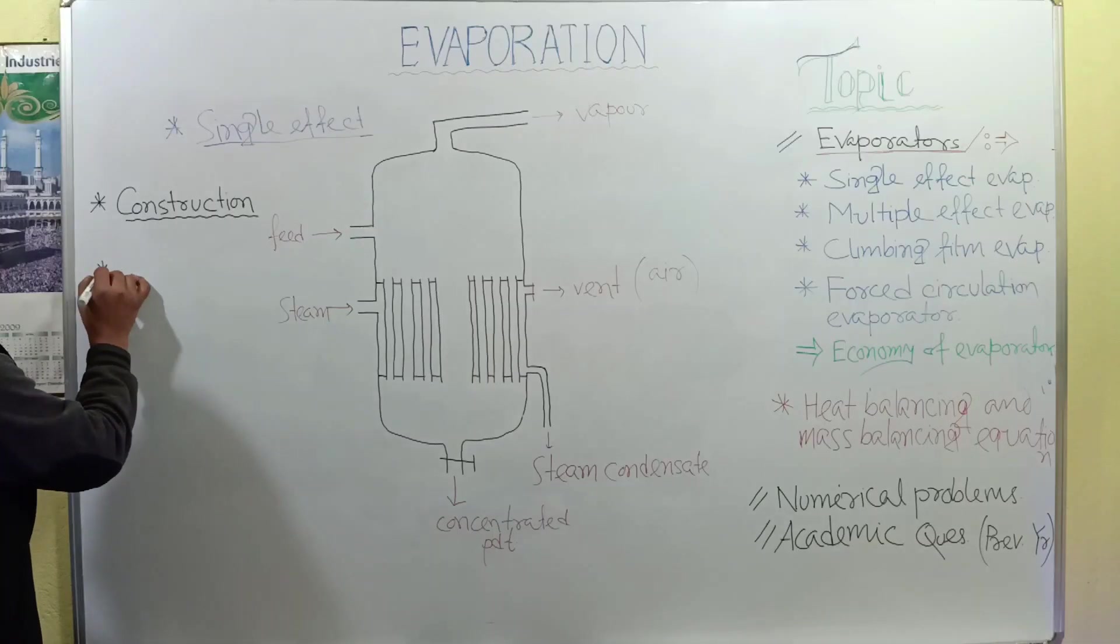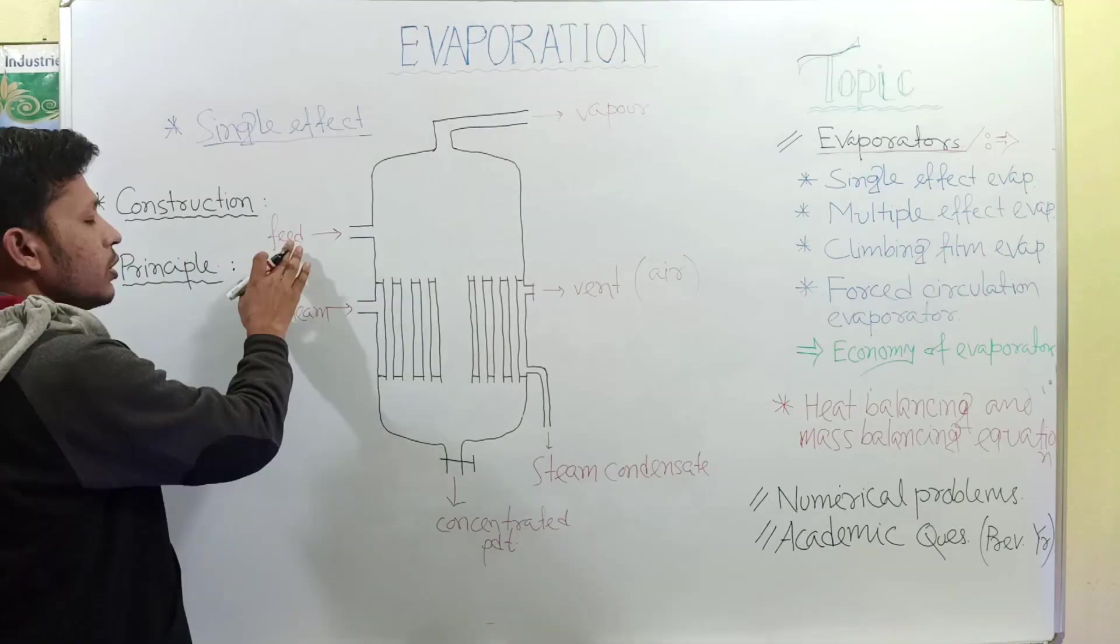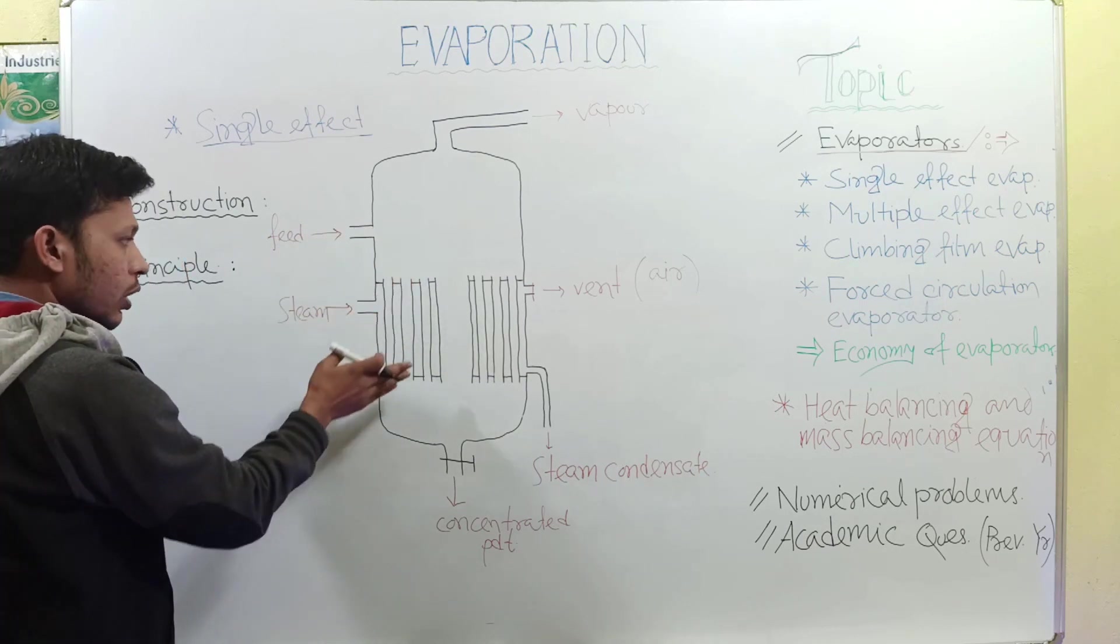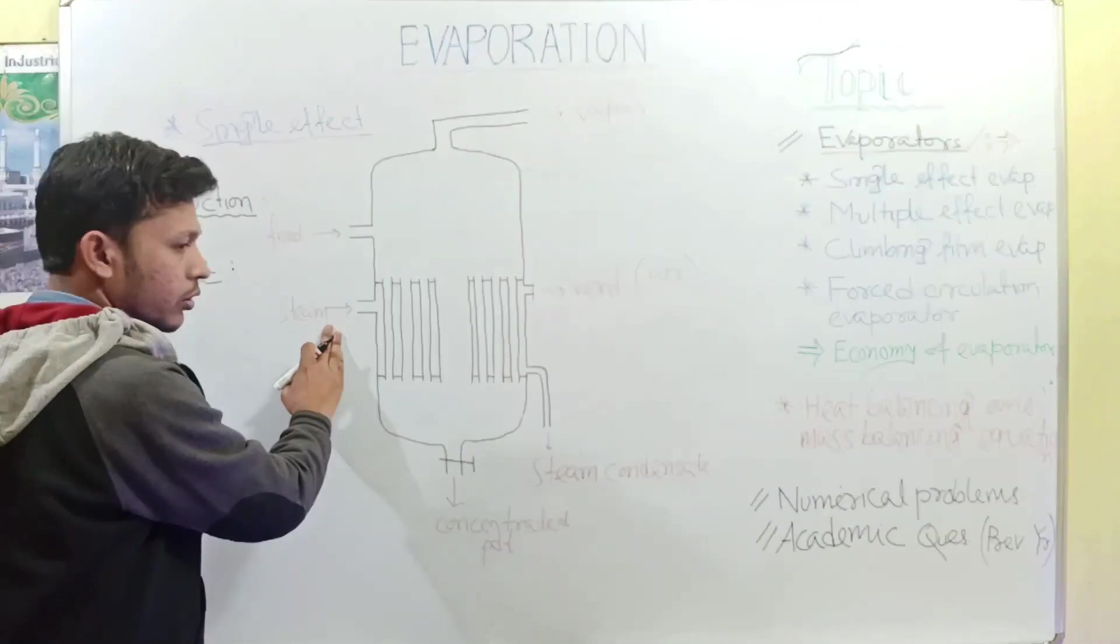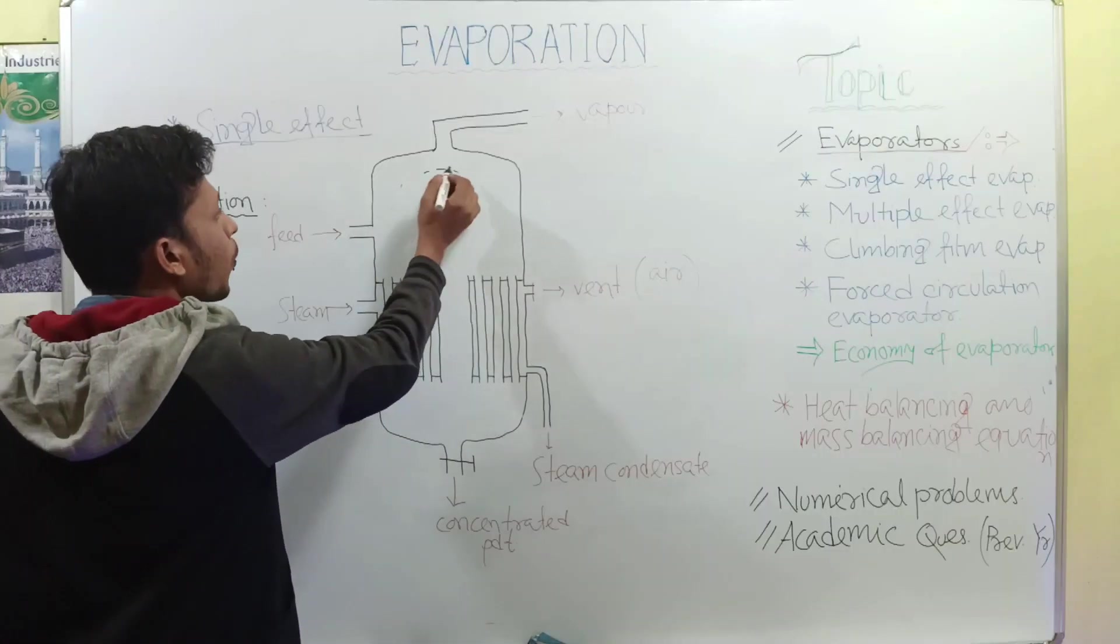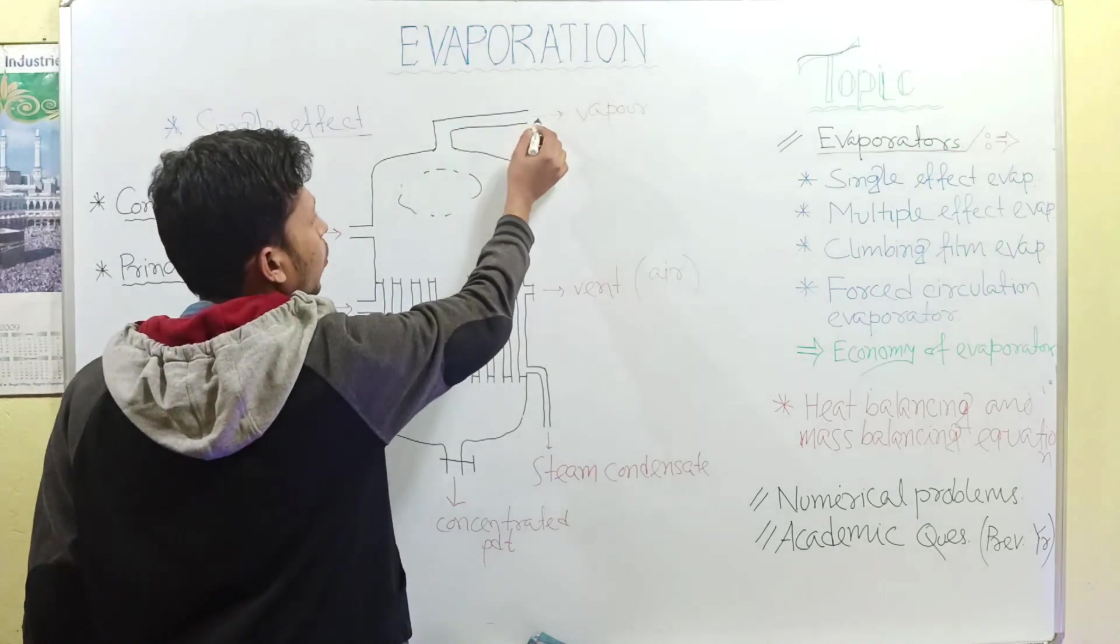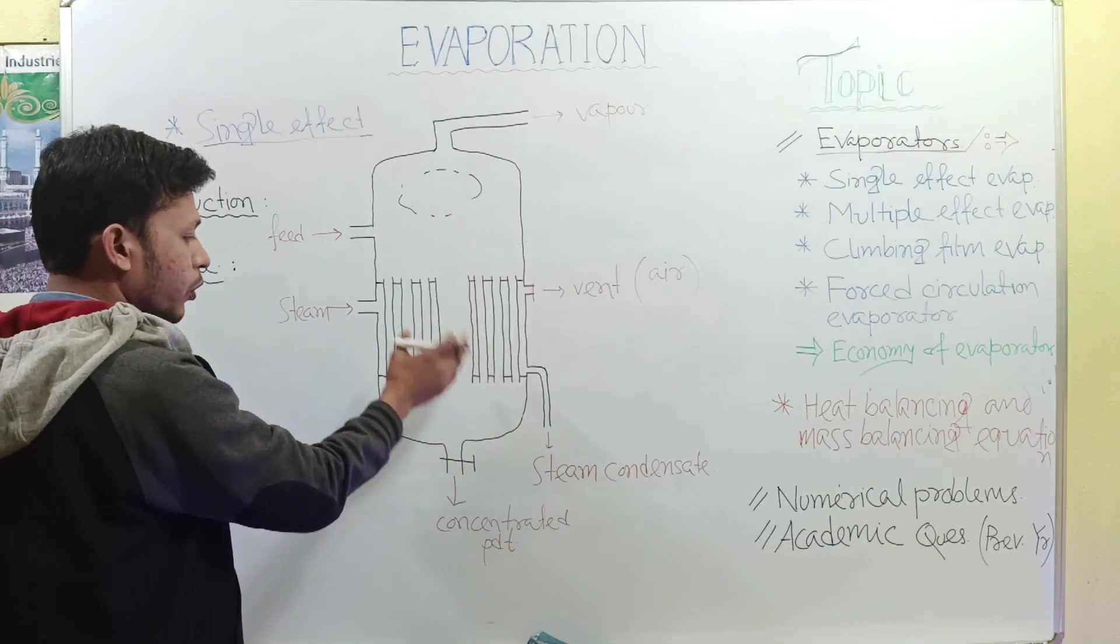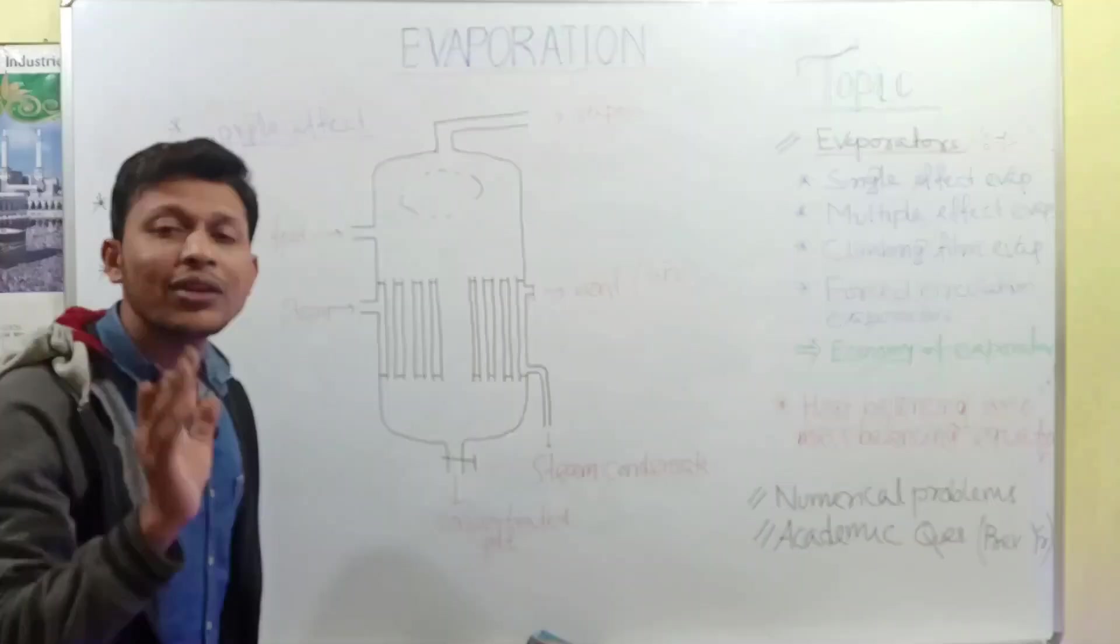Now see the principle. In case of principle, feed is introduced through the tube and steam is provided from the outside into the calendria. This feed liquid comes to contact with the steam and forms vapor. This vapor comes at the top of the cylinder and comes out from the outlet vapor outlet. When desired concentrated product is formed, then collected from the outlet. This is the principle.